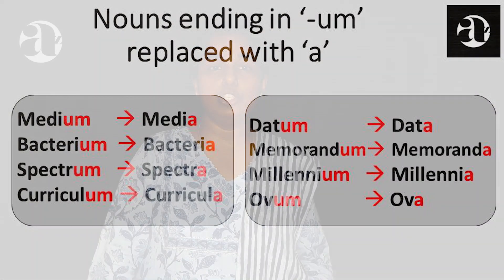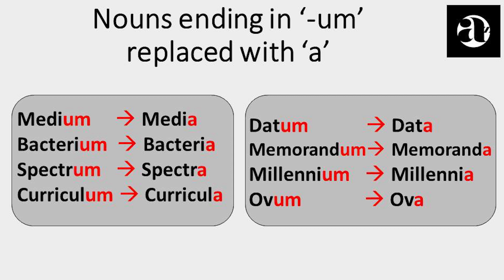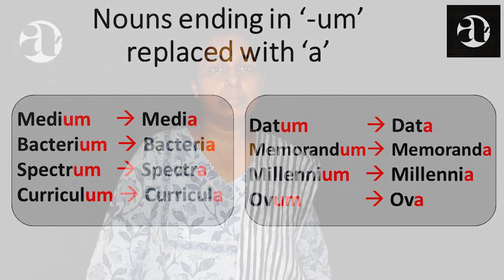For nouns ending in UM, we replace UM with A to form the plural. Medium becomes media, bacterium becomes bacteria, spectrum becomes spectra, curriculum becomes curricula, datum becomes data, memorandum becomes memoranda, millennium becomes millennia, ovum becomes ova.